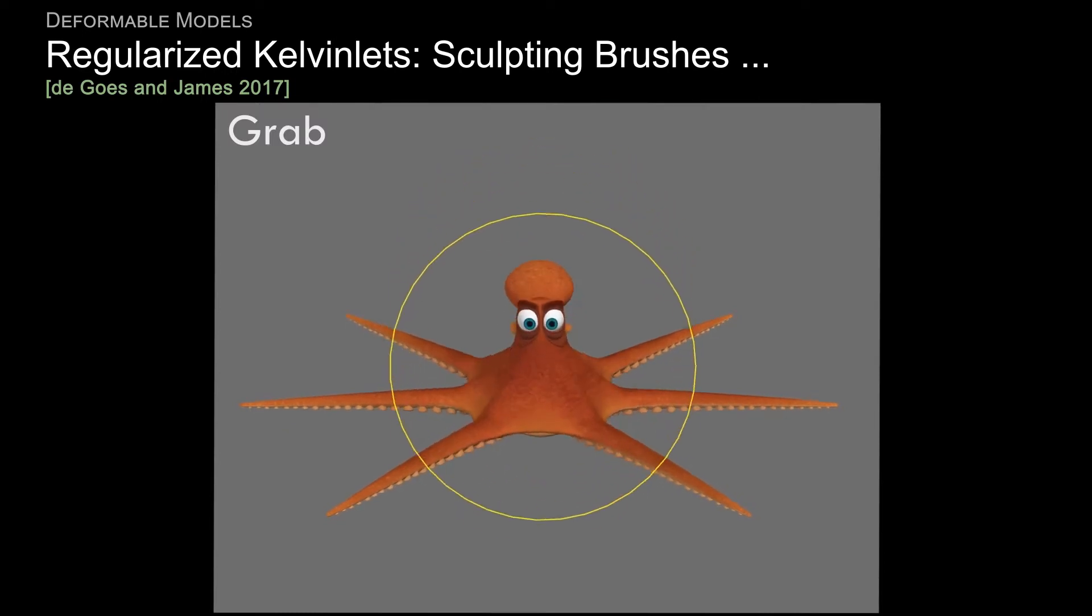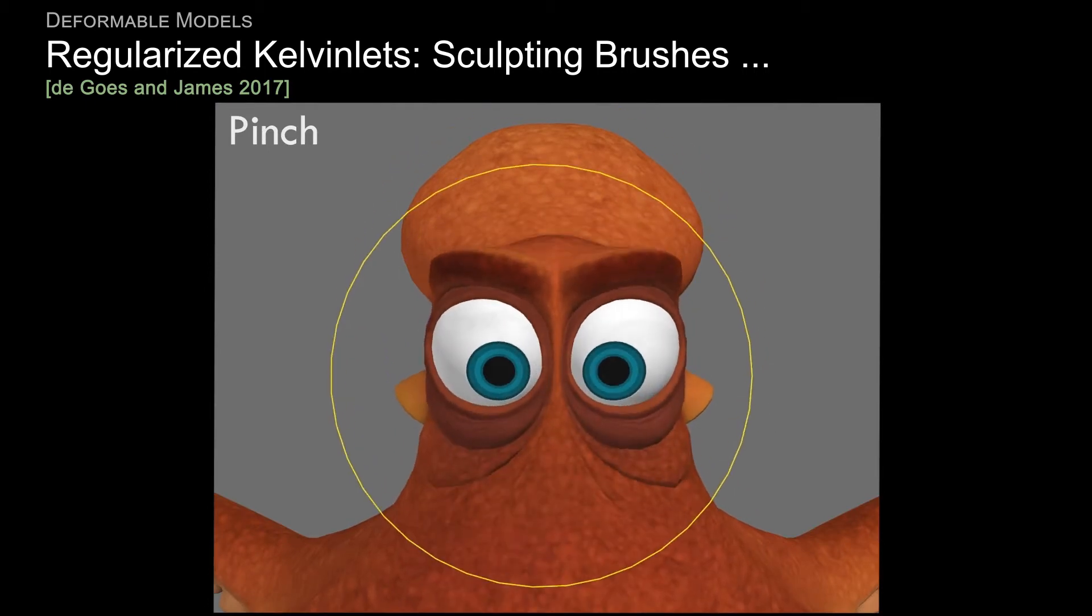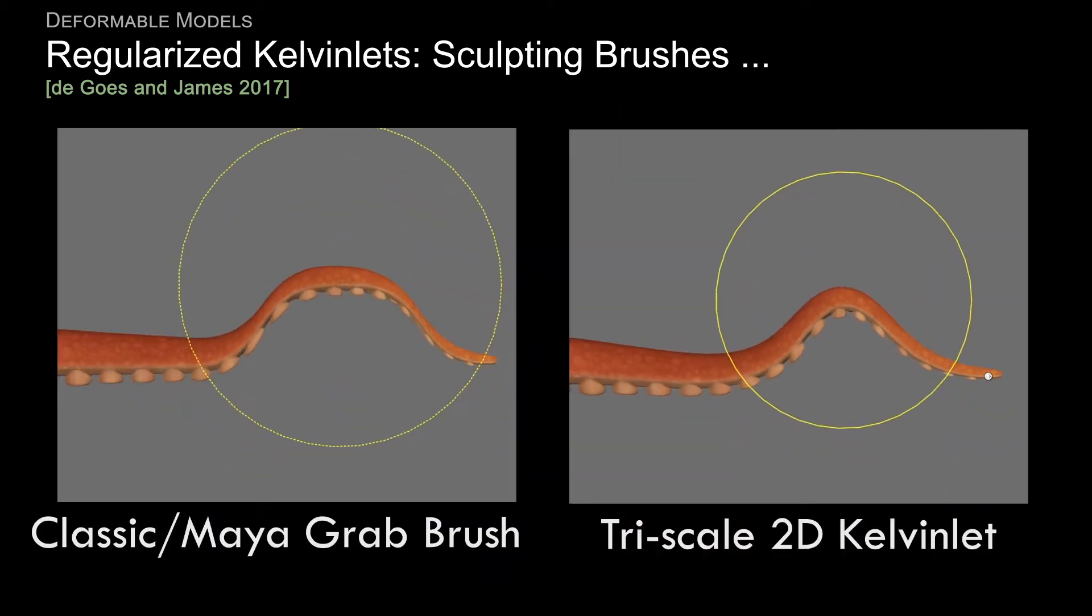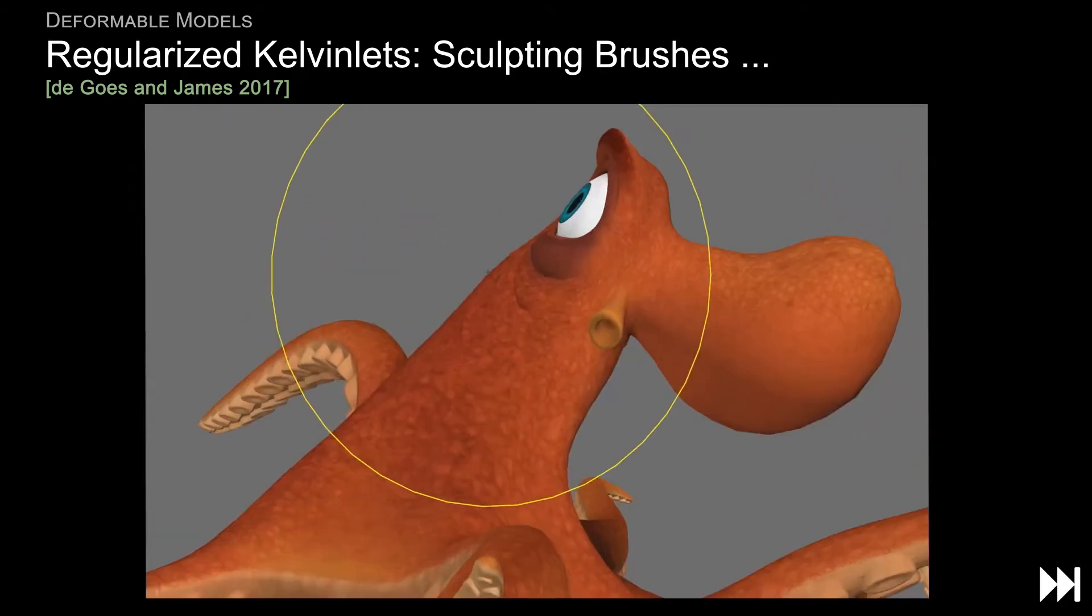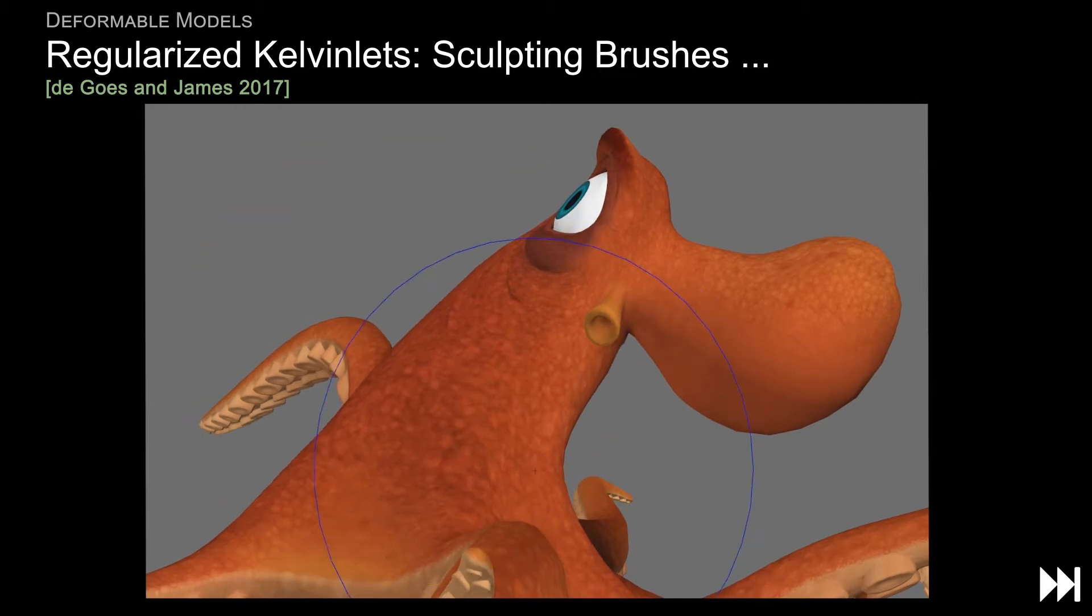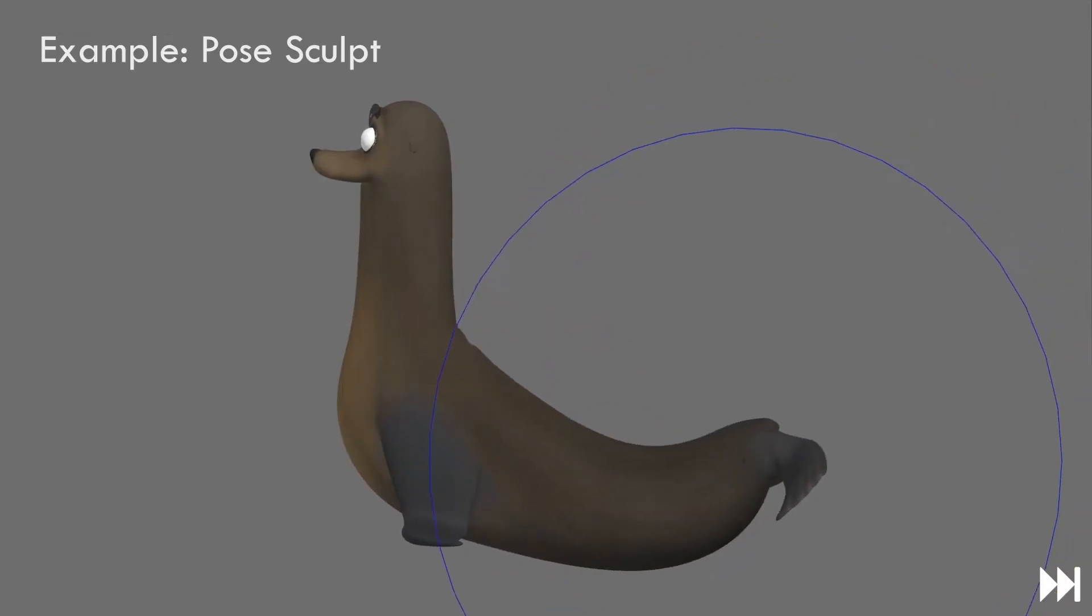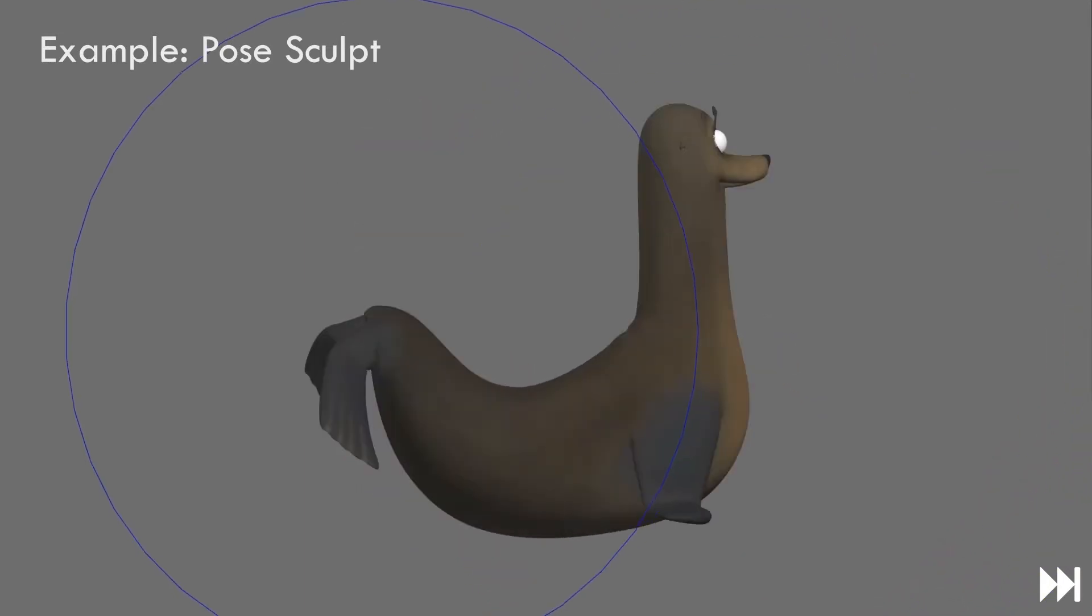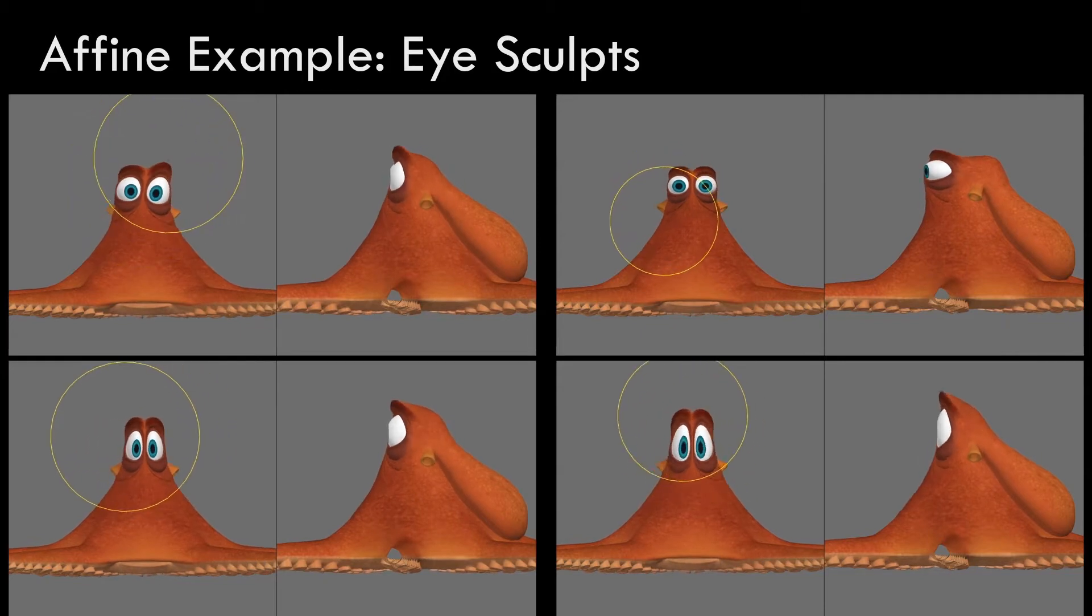A decade and a half later at Pixar, these ideas of pre-computing point like greens function responses was super useful. But now instead of pre-computing a response for a specific geometry using some discrete methods, we could pre-compute the responses analytically by hand or in Mathematica to know how this brush would deform this elastic space the character was embedded in. And this was super useful for sculpting and posing and super fast too because it was all known analytically.